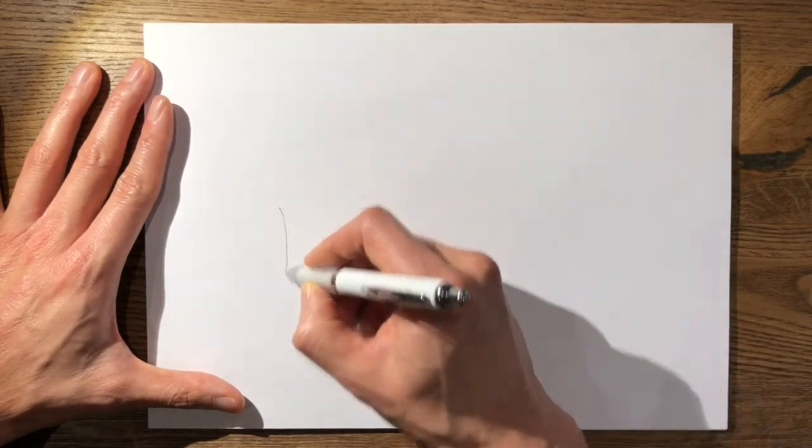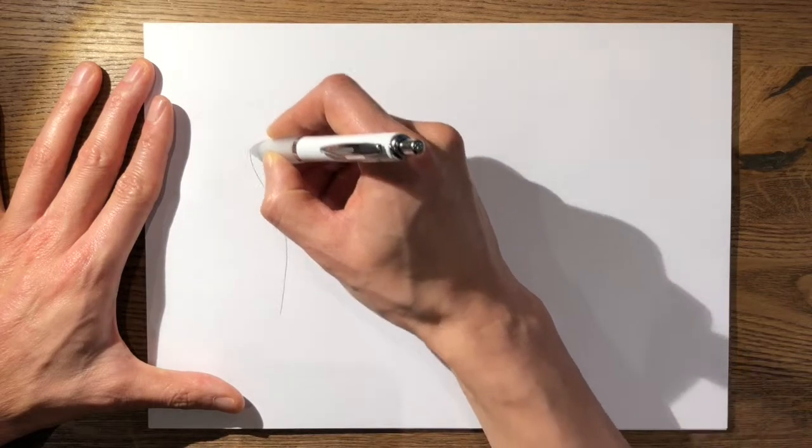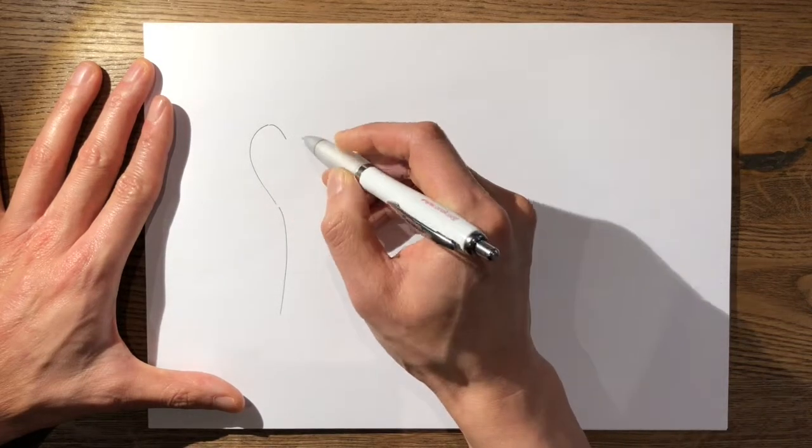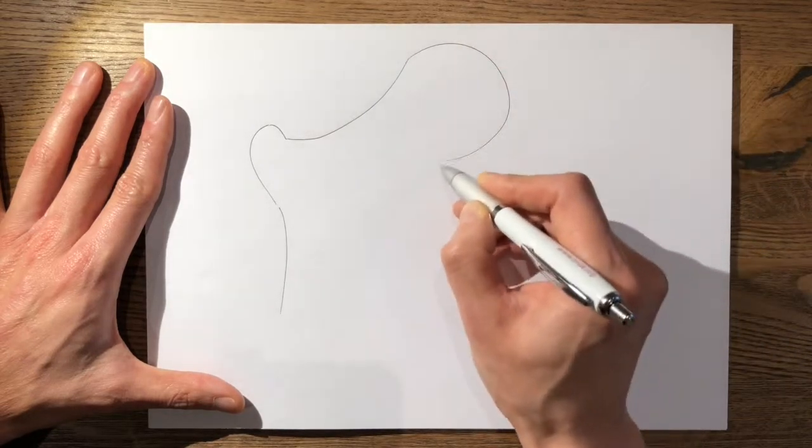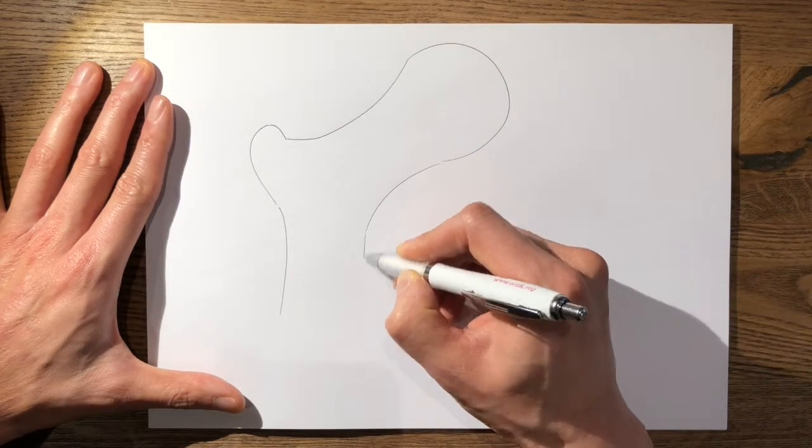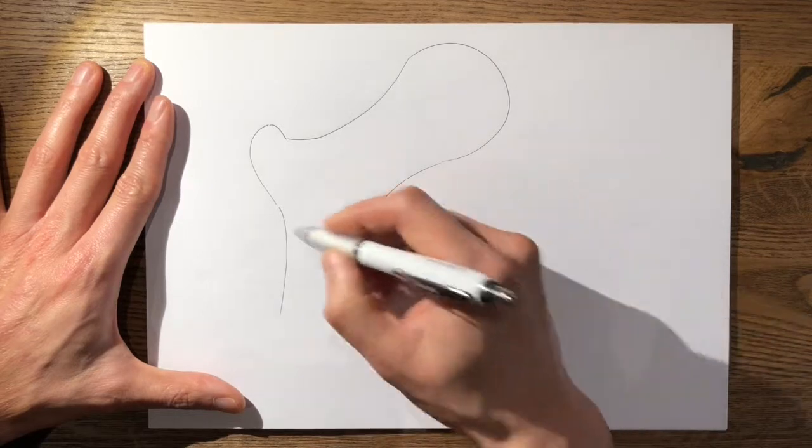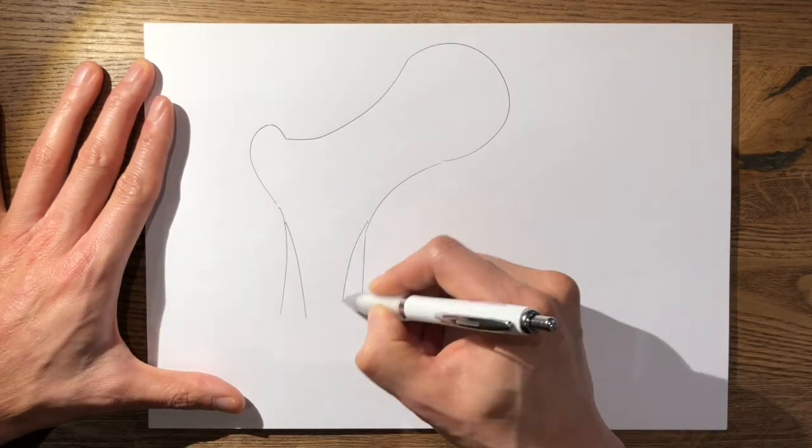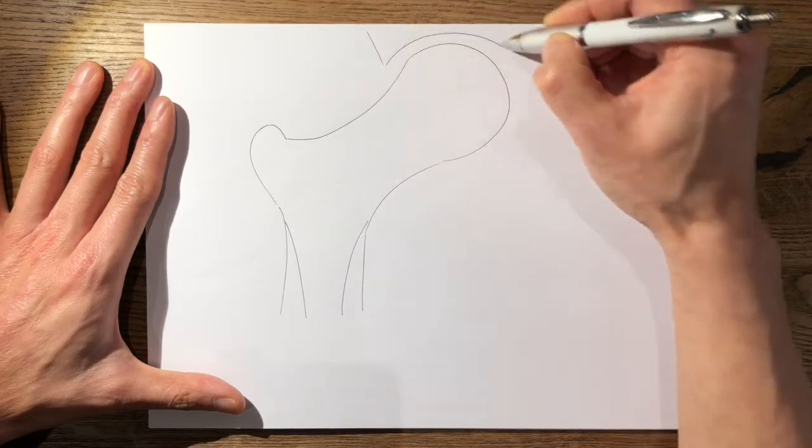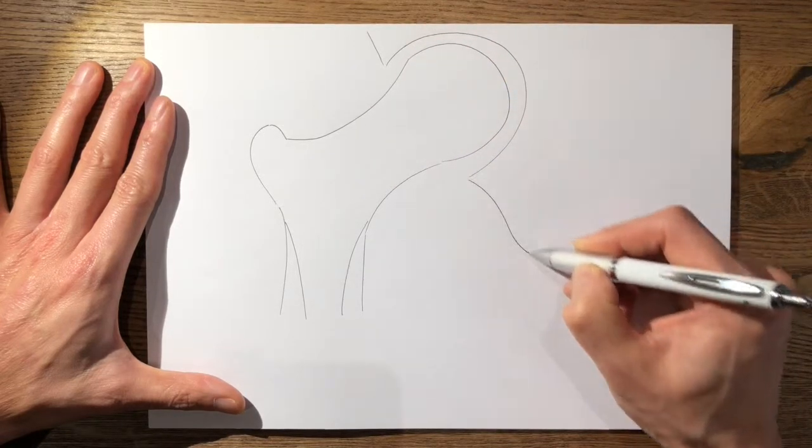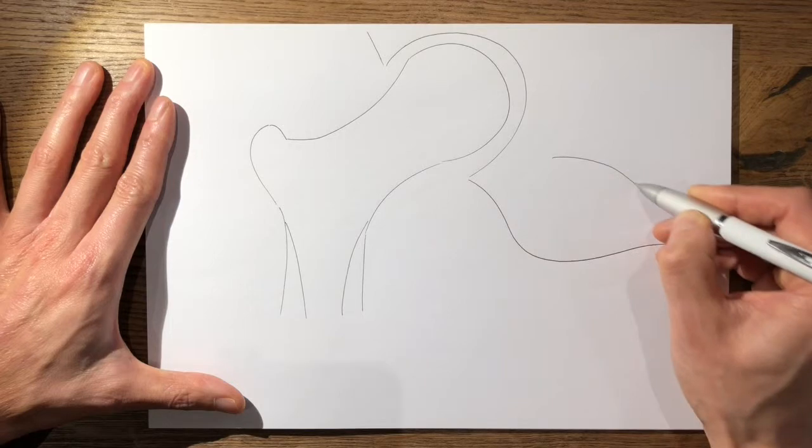So first of all, I'll draw the proximal femur with the trochanter here, and then your neck like so, then you have your head there, like so, and you'd have your cortex here and here, and then I'll draw the acetabulum, like so.